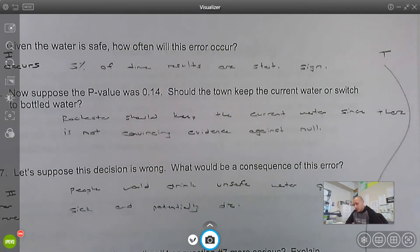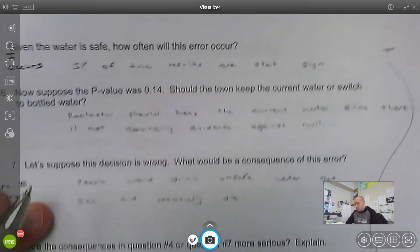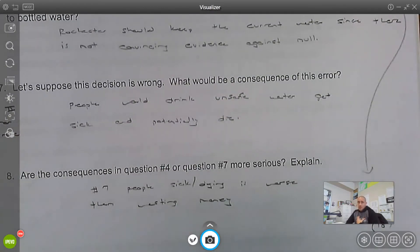So what happens if that decision is wrong? Well, people start drinking unsafe water, probably get sick, maybe pass away. Like, that's a huge issue.